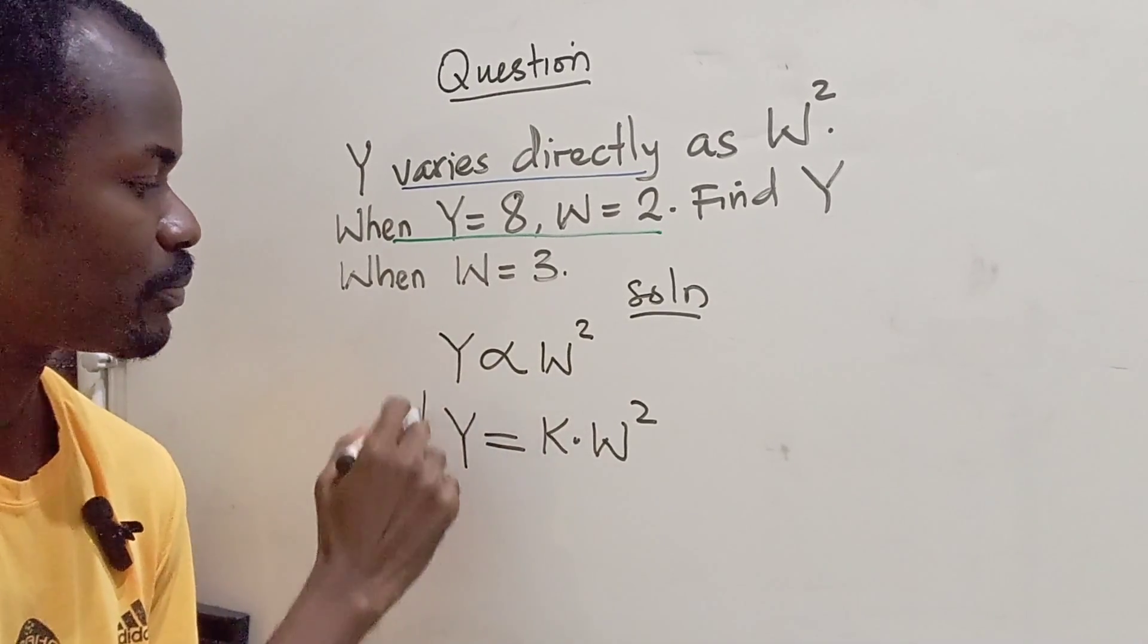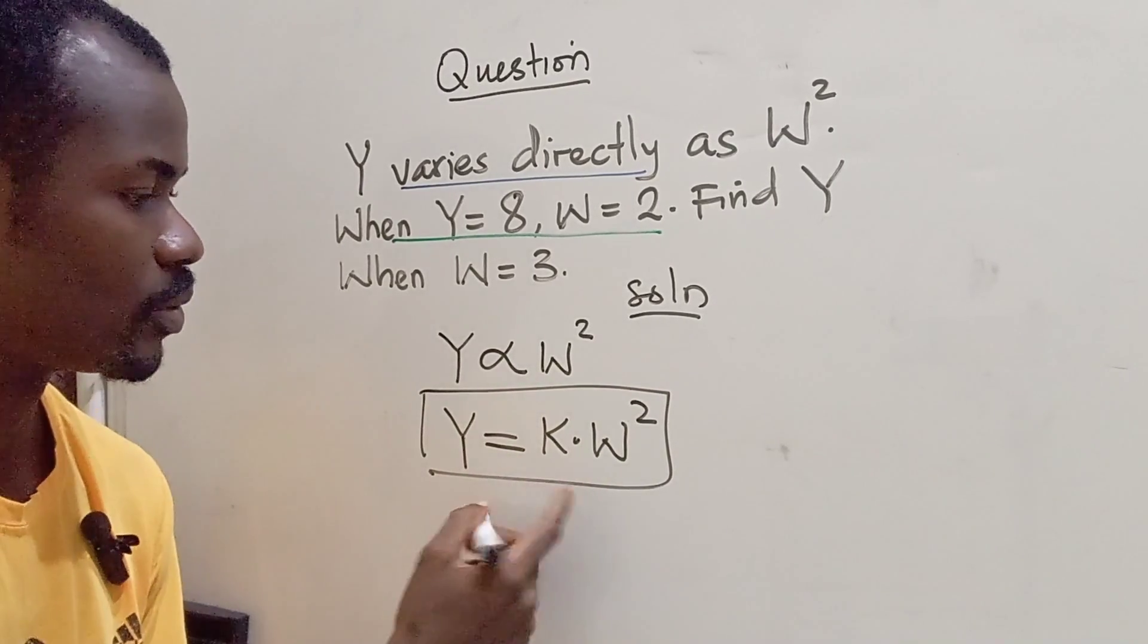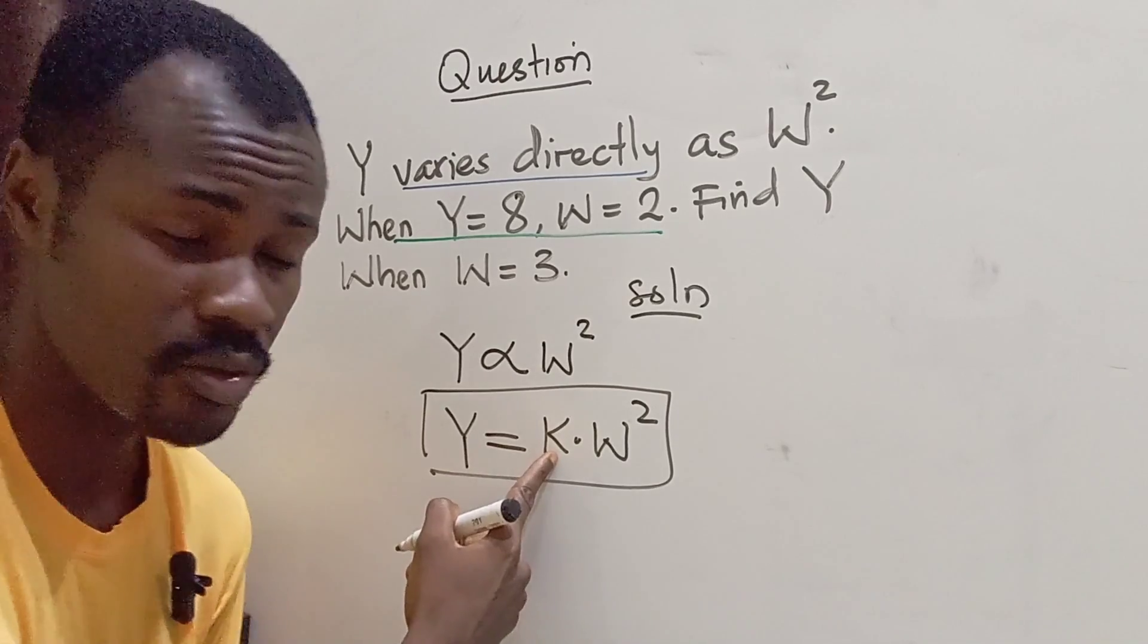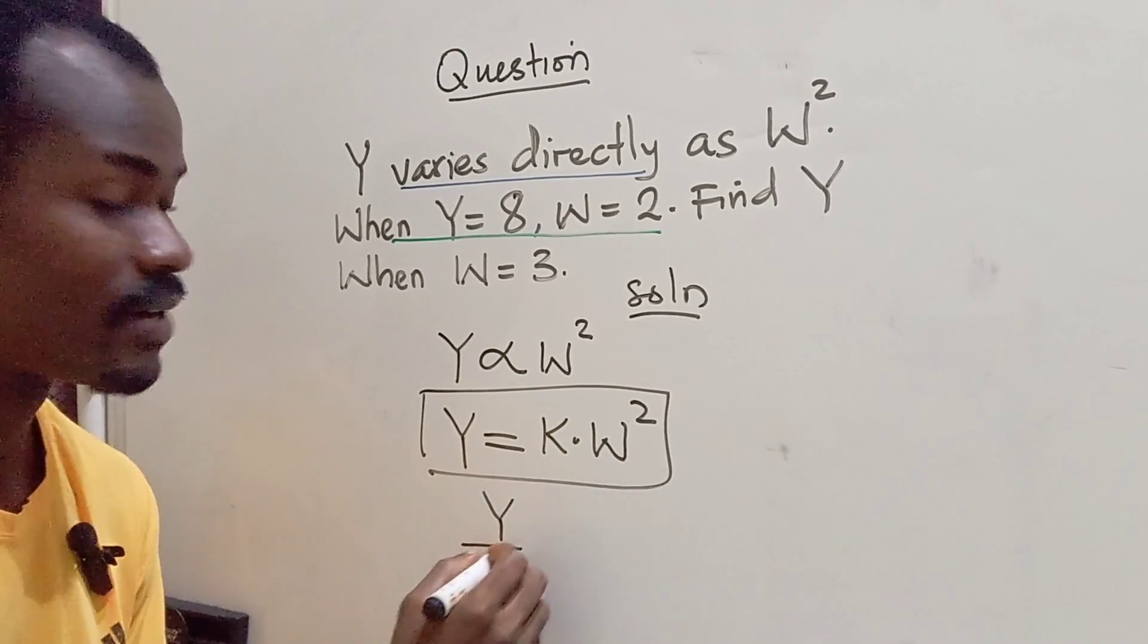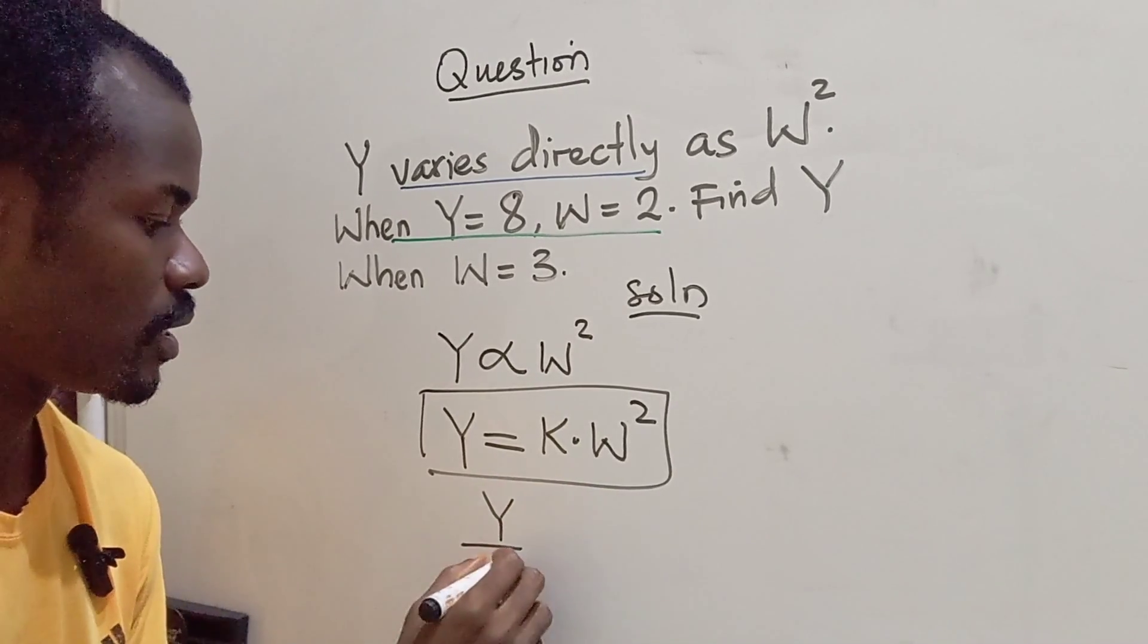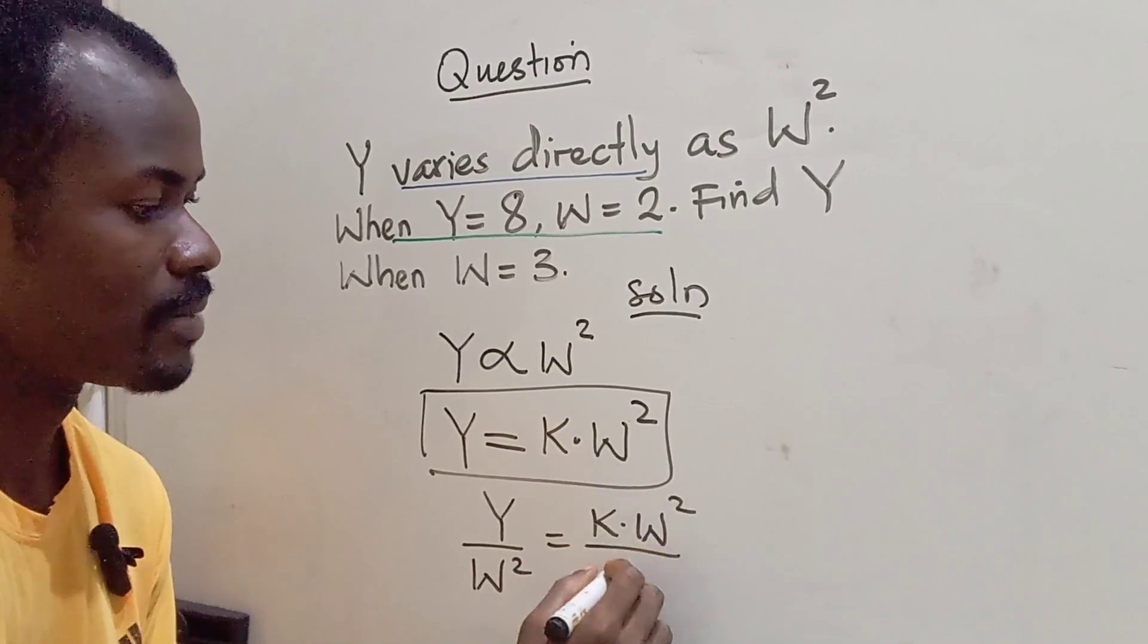Now from this expression, we are going to make K subject of the formula. So for us to make K subject, we are going to divide both sides by W squared. So I have Y divided by W squared